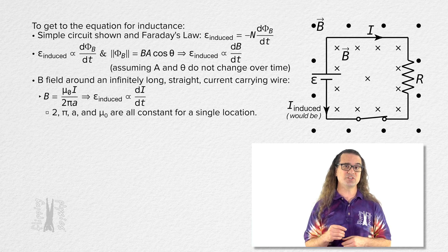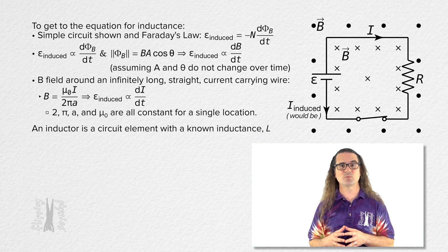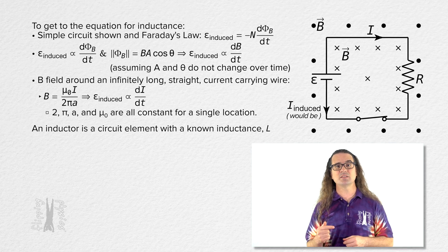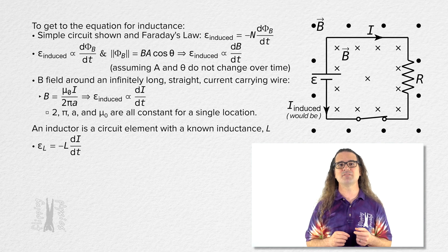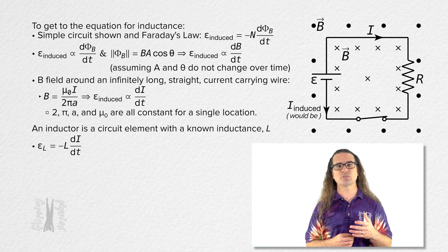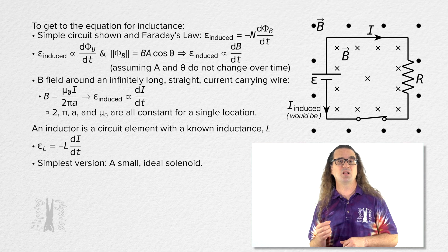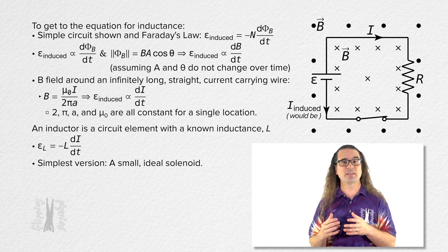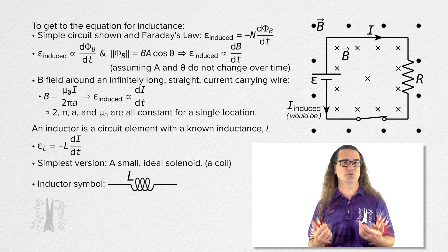This brings us to the equation for the inductance of an inductor. An inductor is a circuit element with a known inductance. The equation for the inductance of an inductor is: the induced EMF of an inductor equals the negative of the inductance of the inductor, capital L, times the derivative of current with respect to time. The simplest version of an inductor is a small, ideal solenoid. Because a solenoid is in the shape of a coil, the symbol for an inductor looks like the coils of a miniature solenoid.